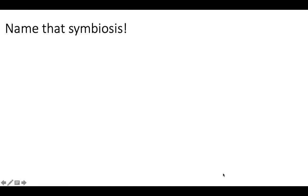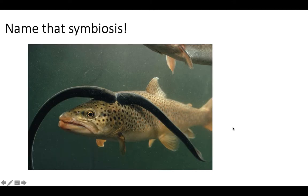Let's play a little game — Name That Symbiosis! Okay, so these are lampreys. They are feeding off of what looks like a trout or salmon. So these lampreys are parasitic. The trout is having nutrients sucked out of it, which is negative for the trout, but it's good for the lamprey because the lamprey is getting nutrients out of it.